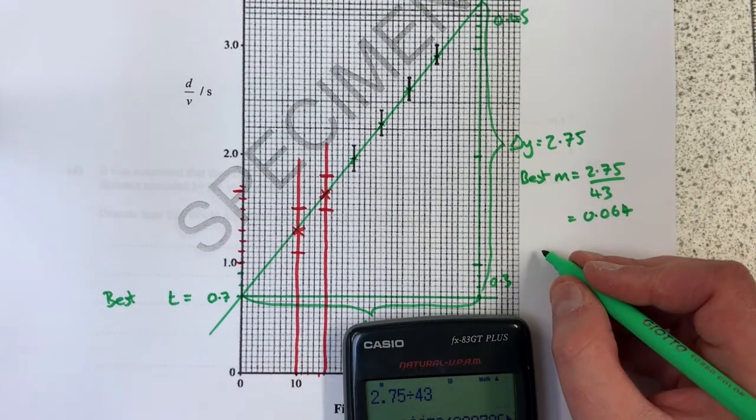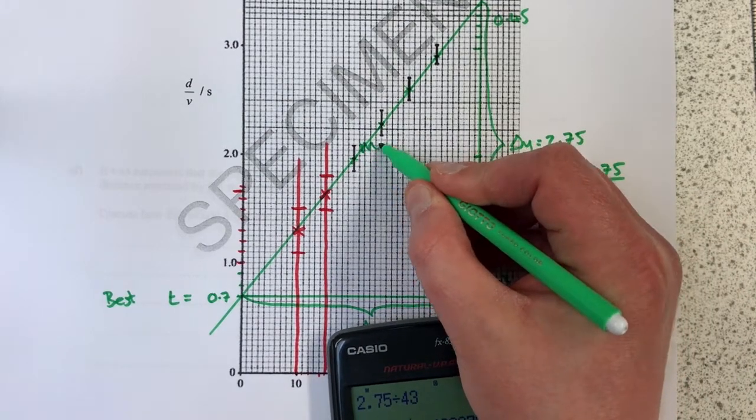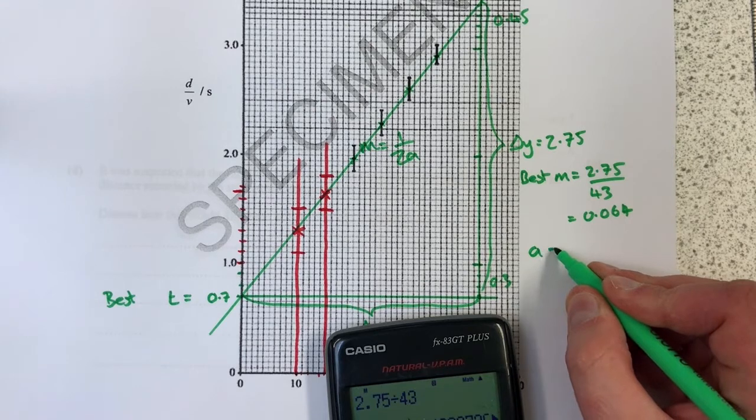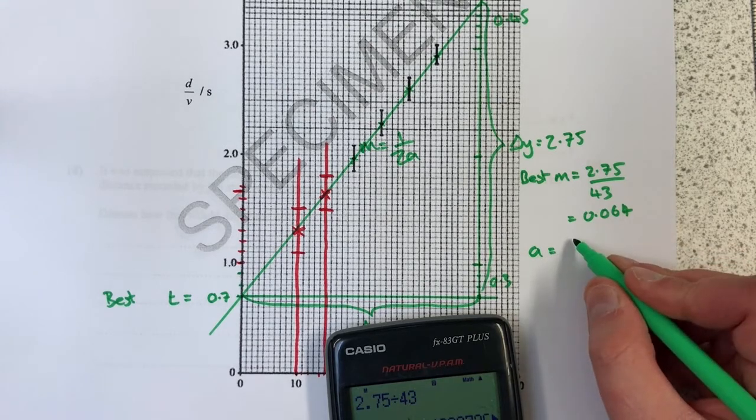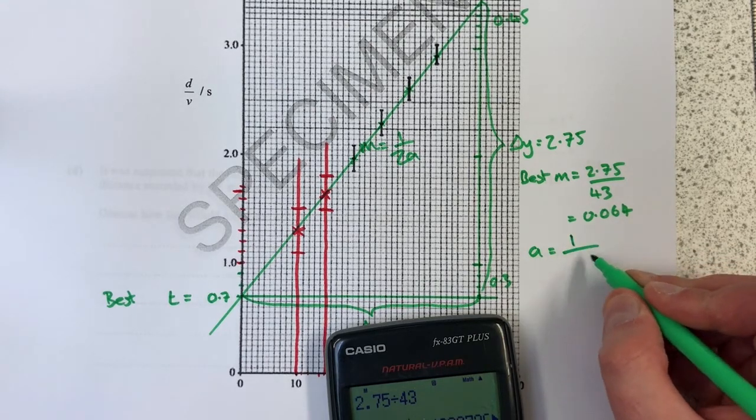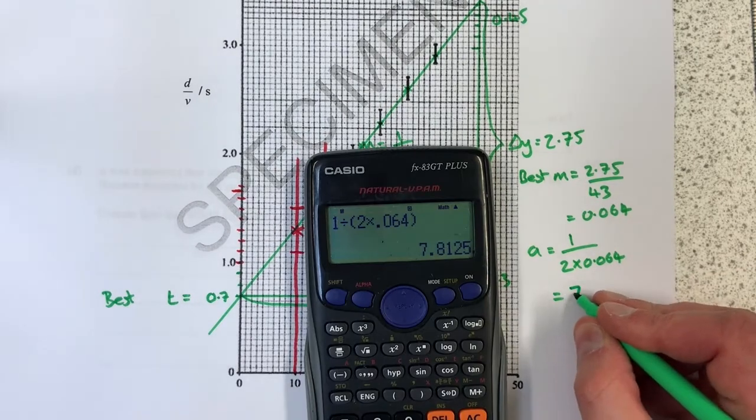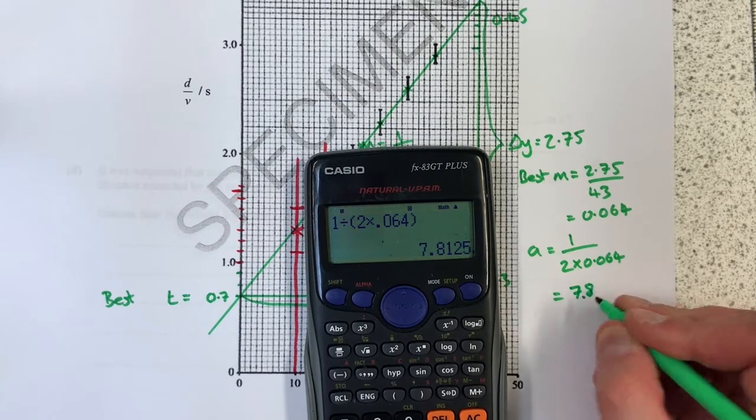The gradient is equal to m equals 1 over 2a, so my best value for a is going to be 1 over 2m. That's going to be 1 divided by 2 times 0.064, 7.8 is my best value for a meters seconds to minus 2.